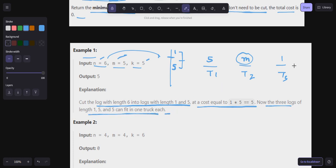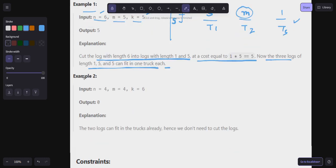Example number two: three trucks are there, k value is 6. Here n can go here and the value is smaller than k. M can go here. Two logs can fit in the trucks already, hence we don't need to cut the logs, so cost is zero.